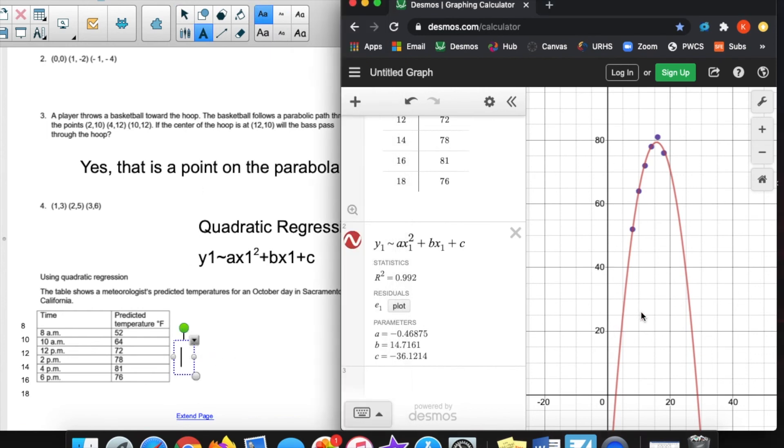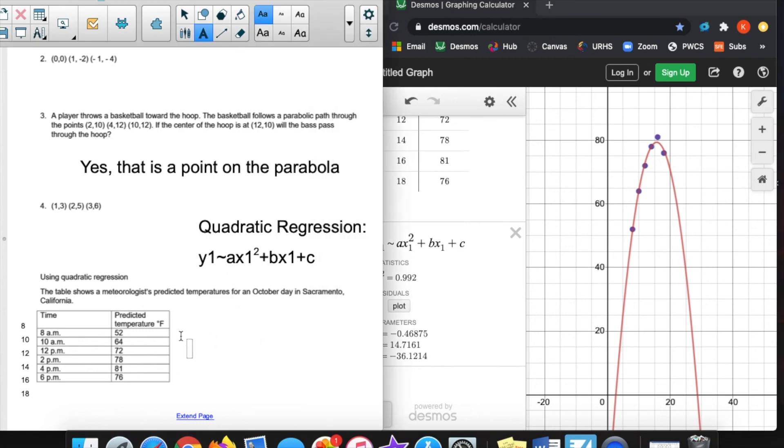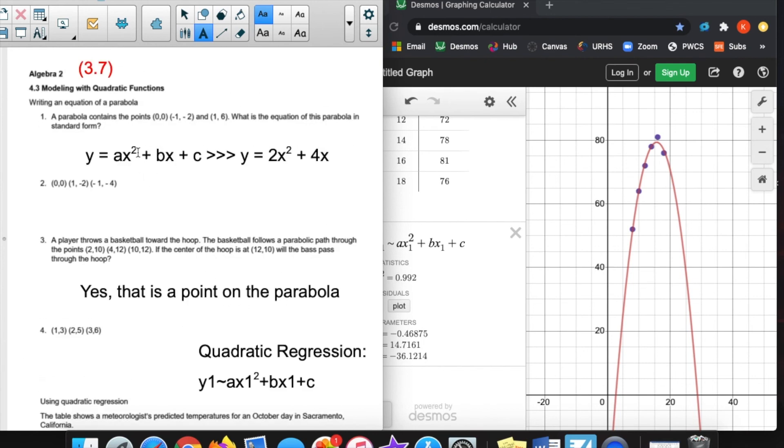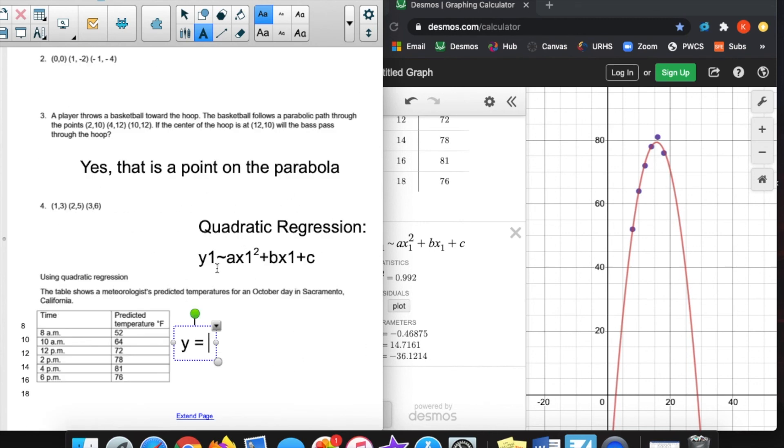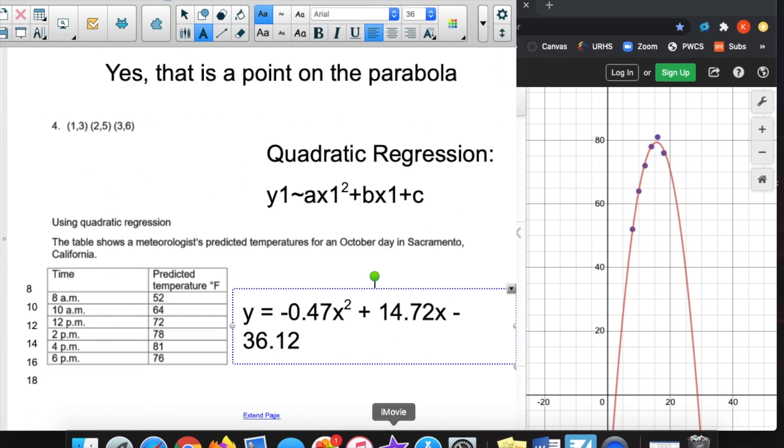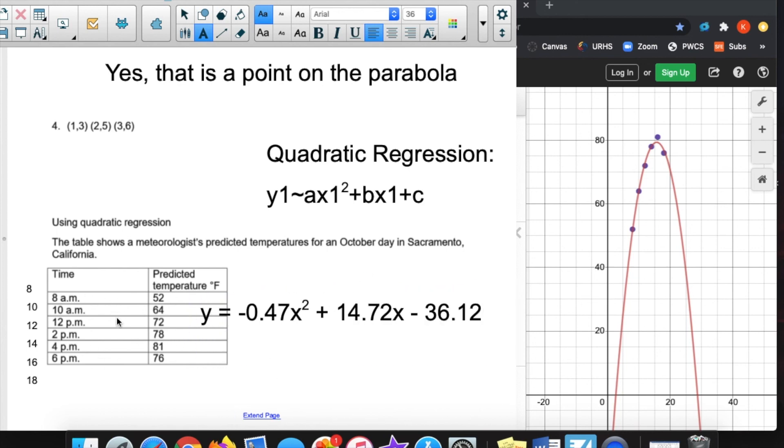So again, if I'm trying to get the equation of this guy, I'm going to put in these values for a, b, and c. So it would be y equals, and you use the standard form of a quadratic when you give the equation answer, but this equation right here is only what you type in to Desmos. That's its only purpose. Your answer should not, your equation answer should not include these ones and the squiggly and all that. So the only purpose of this equation is for Desmos. So it equals -0.47x² plus 14.72x minus 36.12. So that would be the full equation of this guy, representing this situation, all these temperatures at this time.